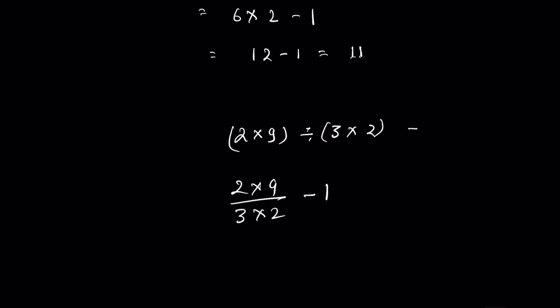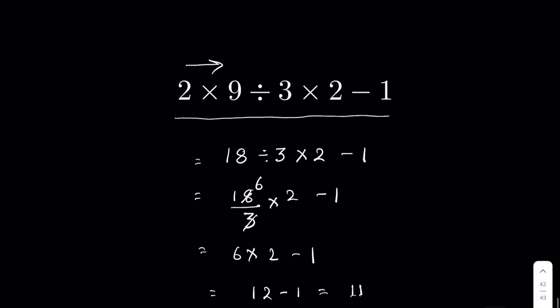This question says that we have to solve it from left to right. First multiplication, so these two, then division, then again multiplication, and the subtraction at the end. So correct answer is 11.